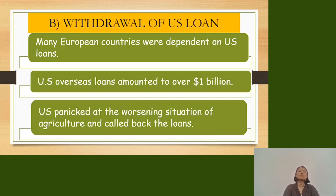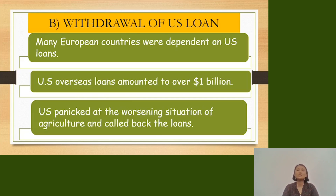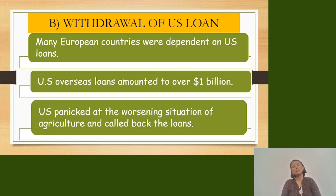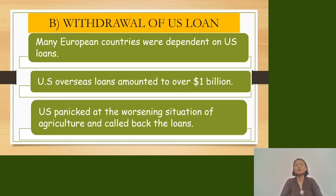The second cause of the Great Depression was the withdrawal of US loans. Many European countries were dependent on US loans. The US loan amounted to over one billion dollars. When the US panicked at the worsening agricultural situation, it called back those loans.